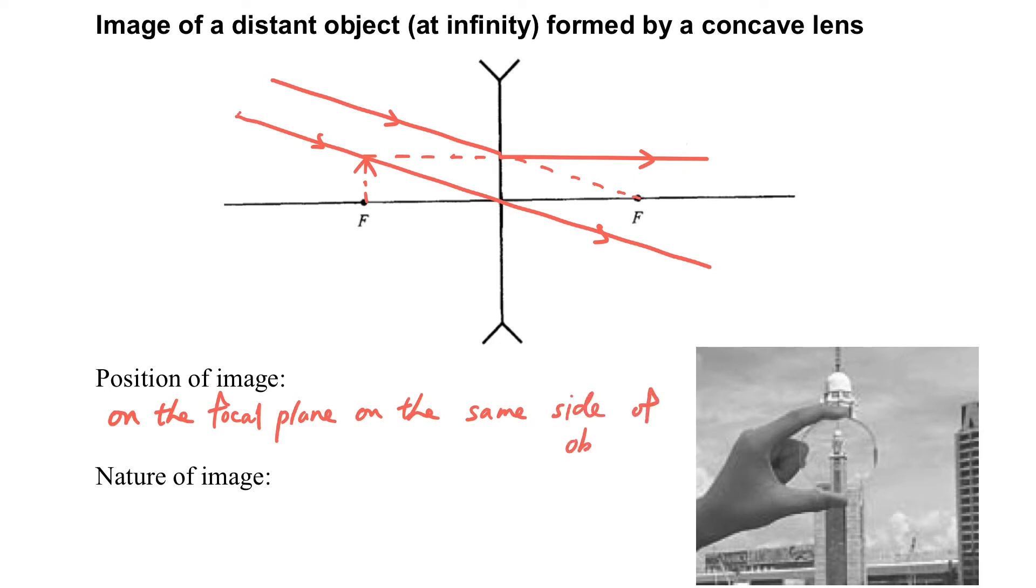So the position of the image is on the focal plane on the same side of the object. And the nature of the image will be virtual, erect and diminished in this case.